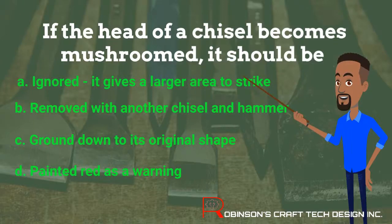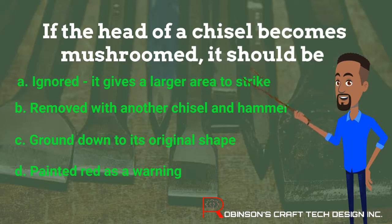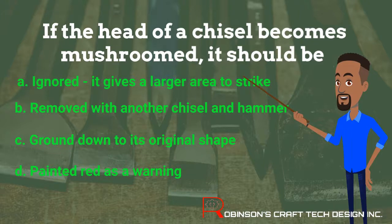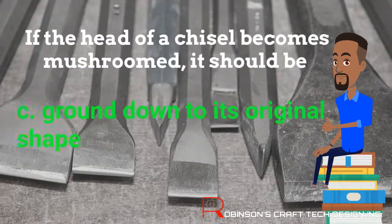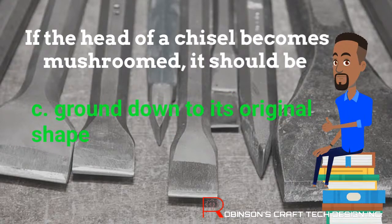If the head of a chisel becomes mushroomed, it should be: A. Ignored — it gives a larger area to strike. B. Removed with another chisel and hammer. C. Ground down to its original shape. D. Painted red as a warning. The answer is C: Ground down to its original shape.